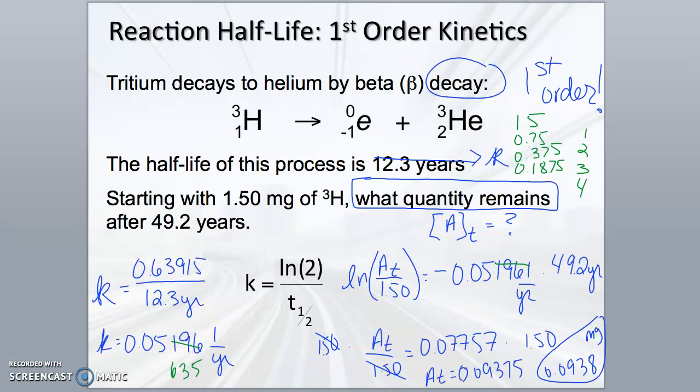Another problem with a similar approach. We use the half-life to find the rate law constant, and then we use the first order integrated rate law. The answer is at the bottom right, 0.0938 milligrams. Again, I recommend pausing the video and just try to follow the work. Then, later, you want to try to solve this problem on your own.